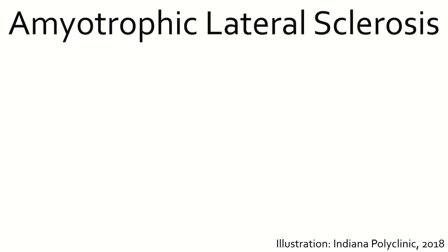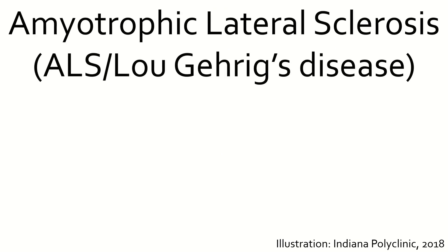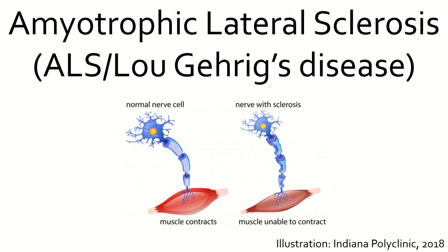Amyotrophic lateral sclerosis, also known as ALS or Lou Gehrig's disease, is a progressively fatal disease that affects about 20,000 Americans every single year. ALS is characterized by the formation of plaques in spinal nerves that cause loss of neural function and eventual cell death. One such hypothesis for the molecular basis of ALS comes from the breakdown in regulation of the fusion sarcoma protein, also known as FUS.